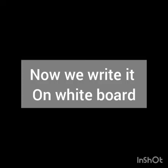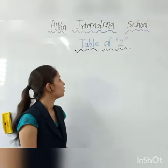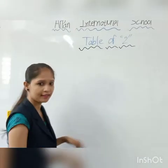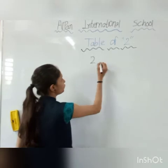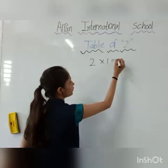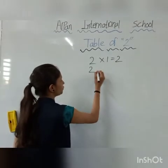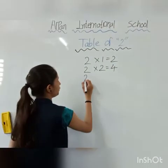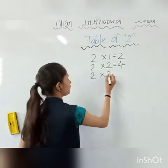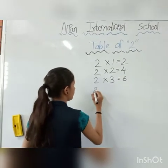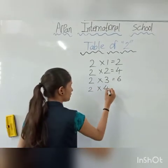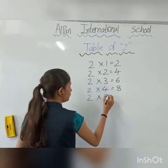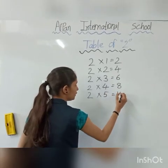Now we sit on whiteboard. Last time we learned table of 2 till 2, 5's are 10. Let's revise. 2, 1's are 2. 2, 2's are 4. 2, 3's are 6. 2, 4's are 8. 2, 5's are 10.